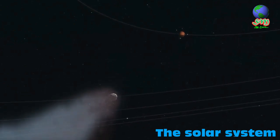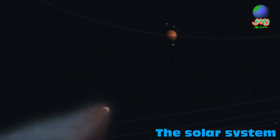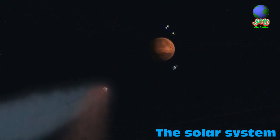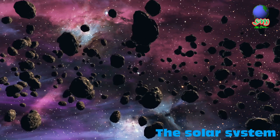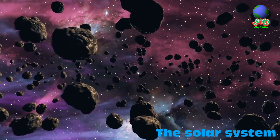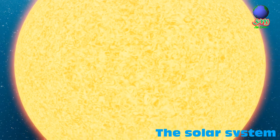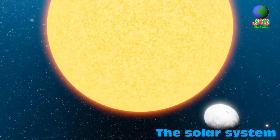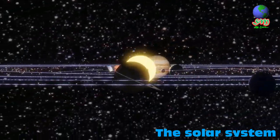In 1705, Edmund Halley realized that a particular comet returns every 75-76 years. In this way, it was first proved that other cosmic objects besides planets are also orbiting the sun. It was during this time that the English term solar system was first introduced.